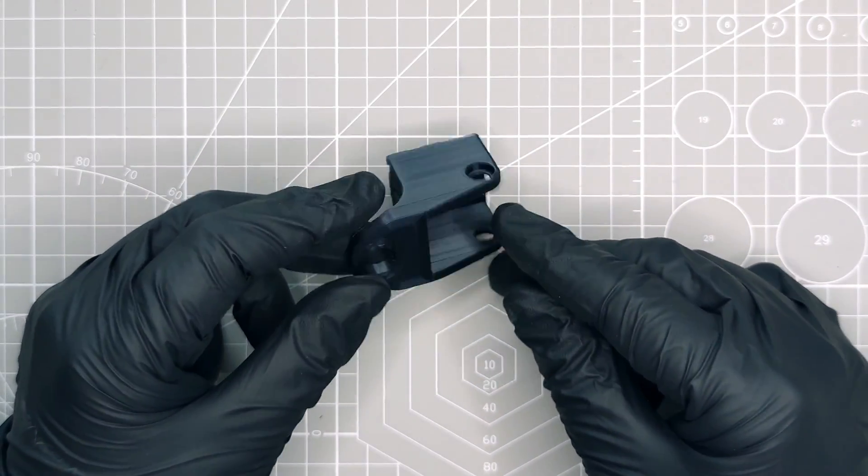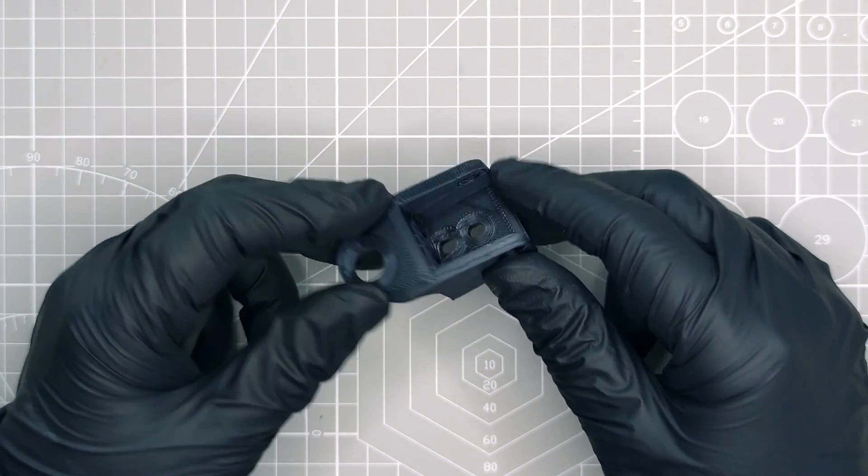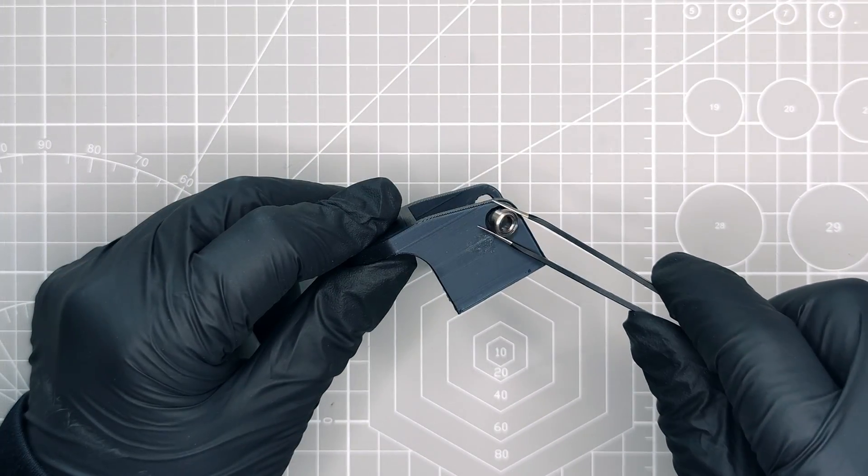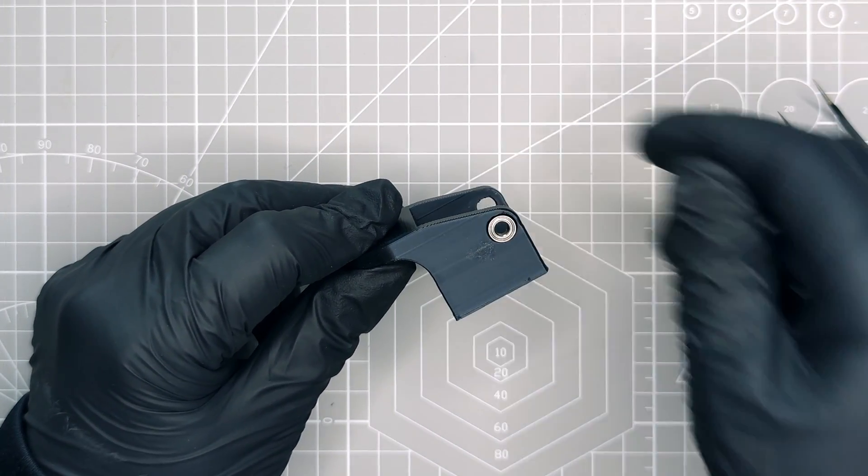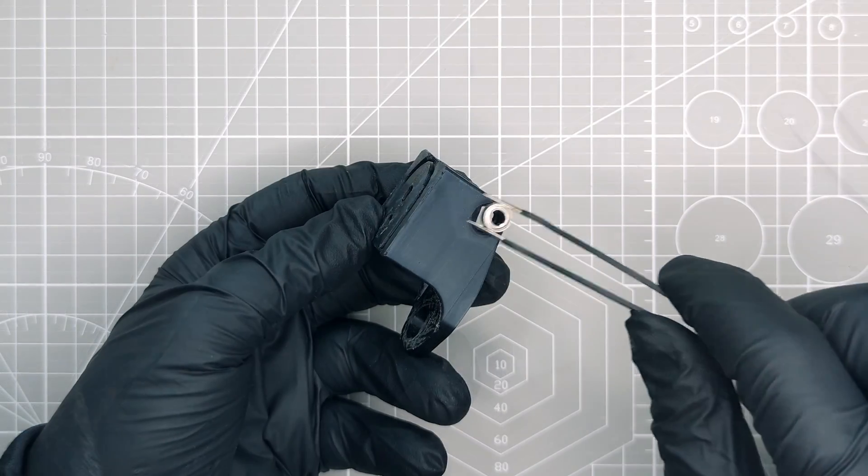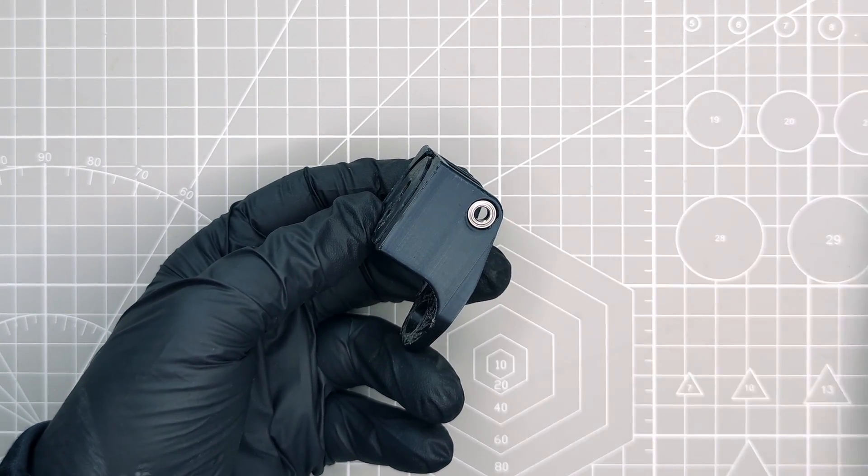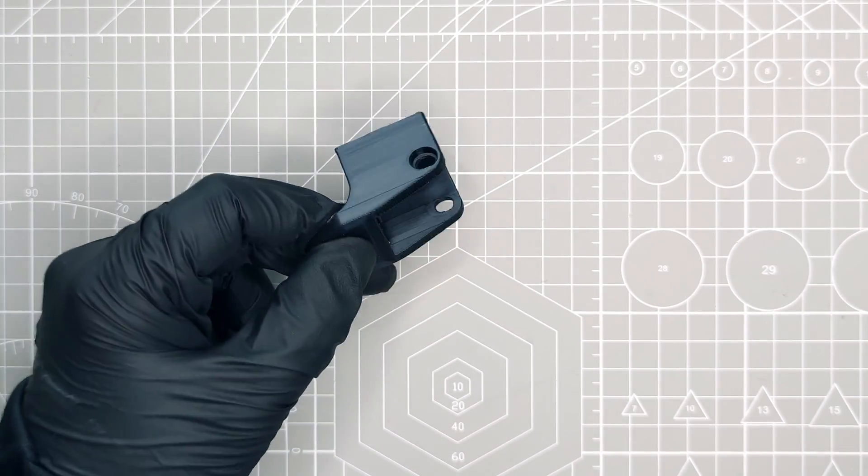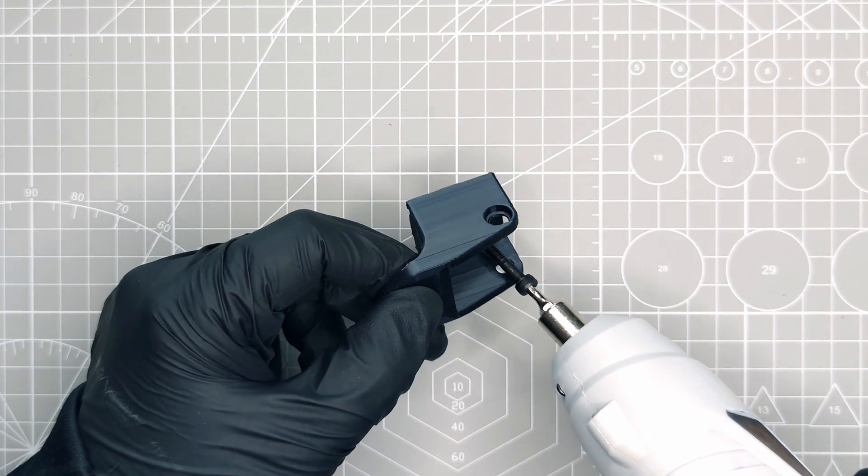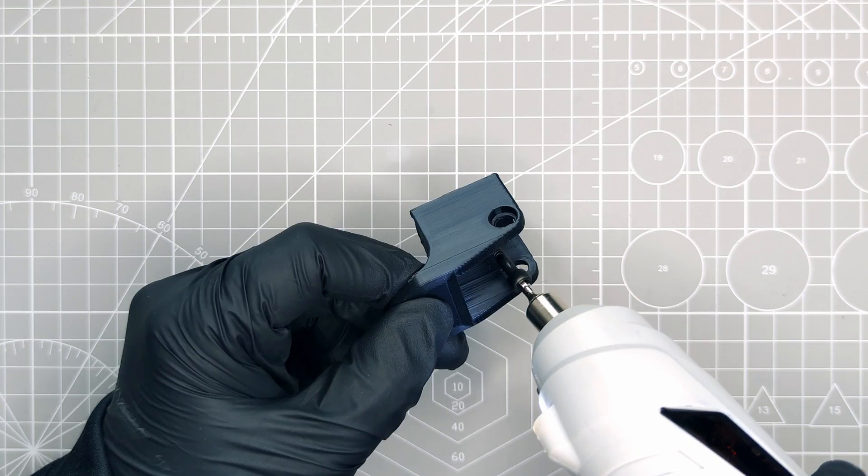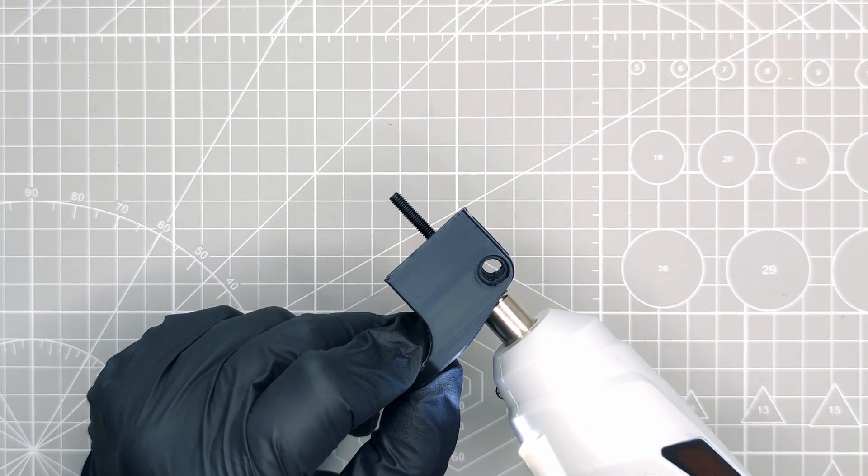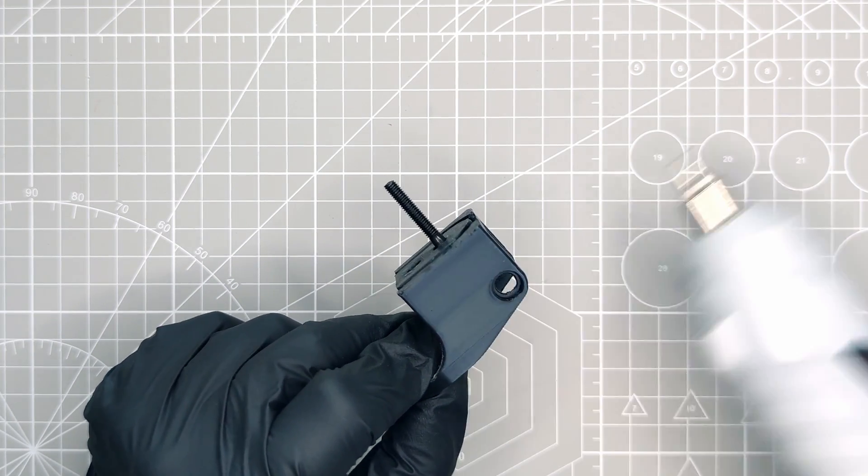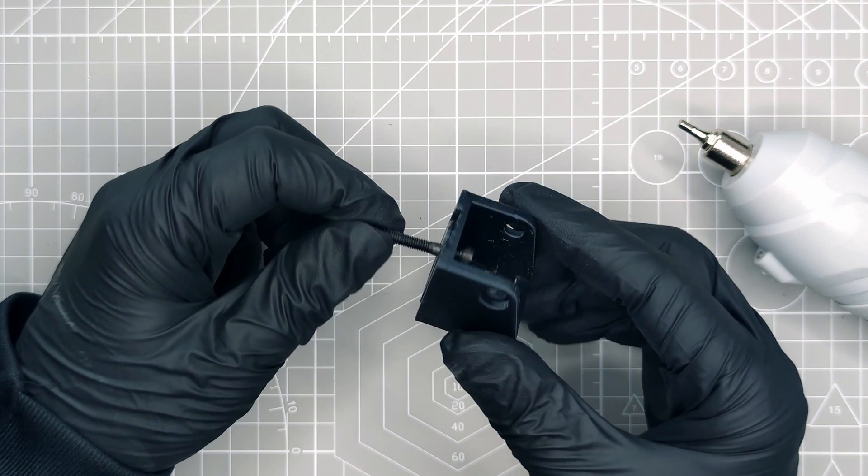We will now check each part for clearance, which will make the final assembly much easier. The first thing we need to do is make sure that the ball bearings can fit into the base. The clearance here is perfect and the ball bearings fit nicely on each side. The next step is to make sure the M4 bolts can be screwed into the base easily. Again, everything seems to be fine here.